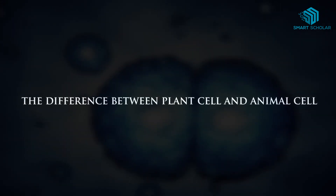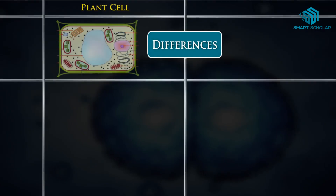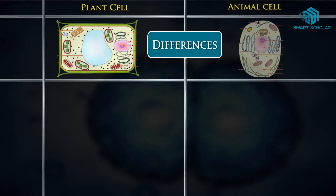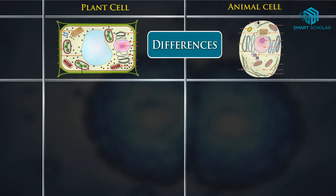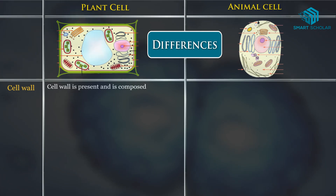Let's get to learn the difference between plant cells and animal cells. In plant cells, the cell wall is present and is composed of cellulose, whereas in animal cells, the cell wall is absent.